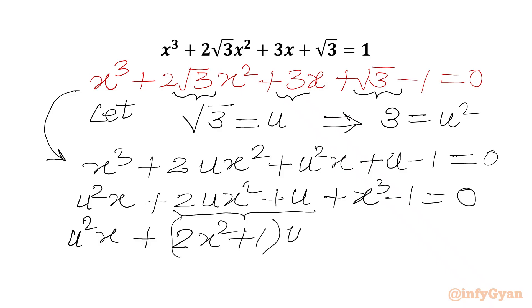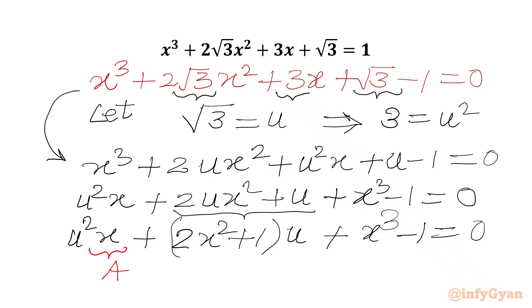Comparing our equation with the standard form au² + bu + c = 0, we can identify: a = x, b = 2x² + 1, and c = x³ − 1.